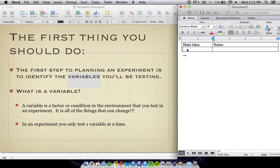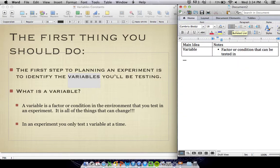A variable in science is a factor or condition in the environment that you test in an experiment. It is a factor or condition that can be tested in an experiment. And most importantly, it can change.